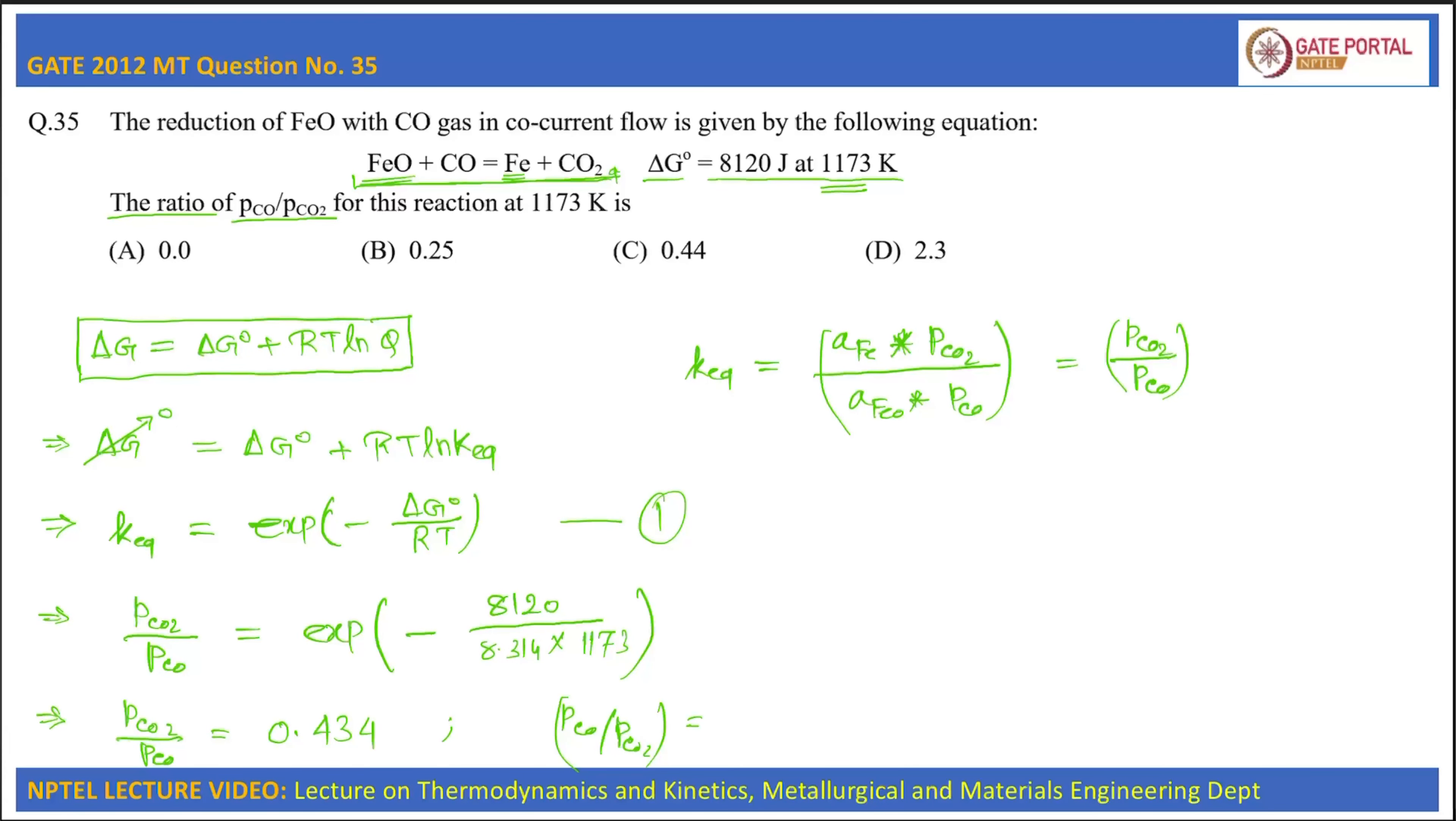So the ratio of PCO by PCO2 will be simply the inverse of this, that is 1 by 0.434, which will be equal to 2.3. So the correct answer is option D.